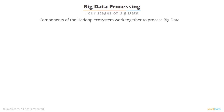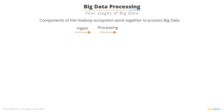After a brief overview of the 12 components of the Hadoop ecosystem, we will now discuss how these components work together to process big data. There are four stages of big data processing: Ingest, Processing, Analyze, and Access.